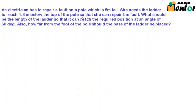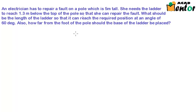So the first example is here. An electrician has to repair a fault on a pole which is 5 meter tall. She needs a ladder to reach 1.3 meters below the top of the pole. What should be the length of the ladder so that it reaches the required position at an angle of 60 degrees? Also, how far from the foot of the pole should the base of the ladder be placed?